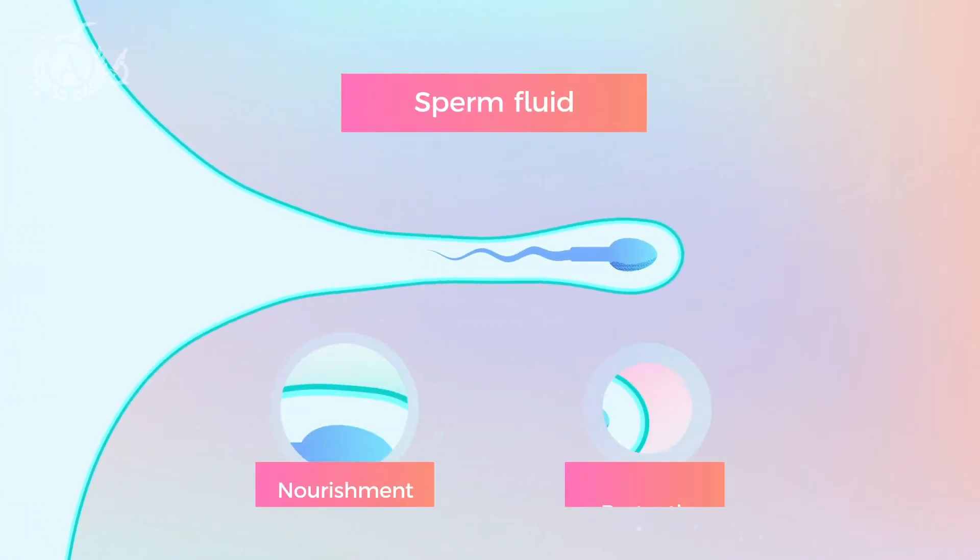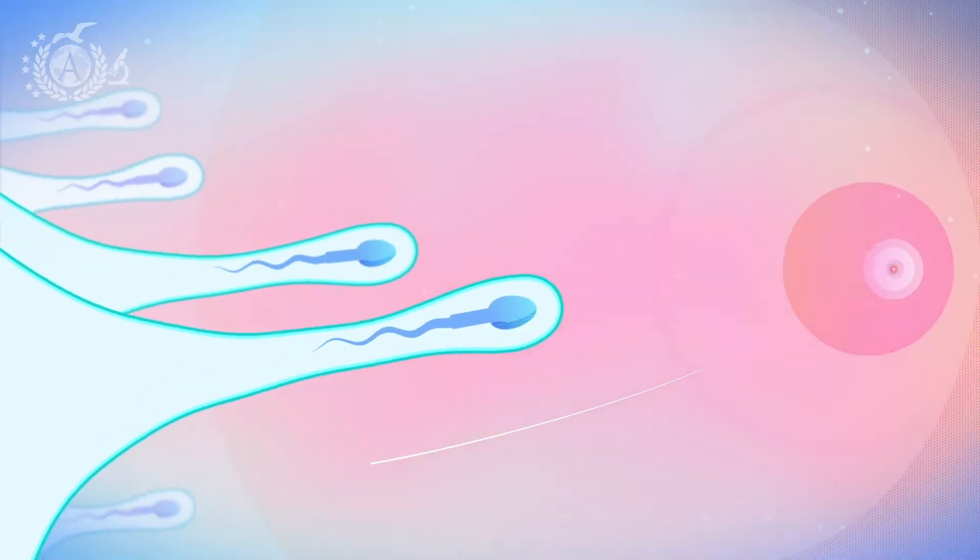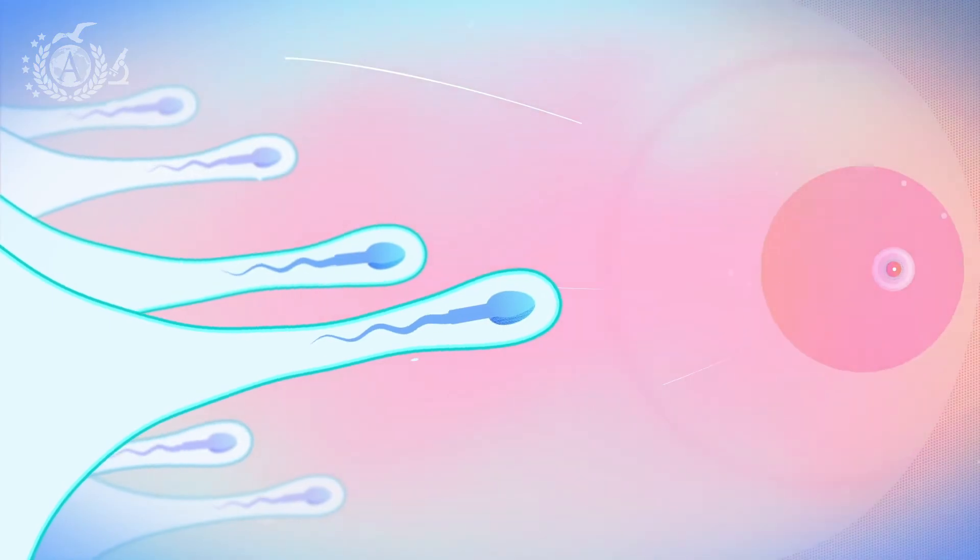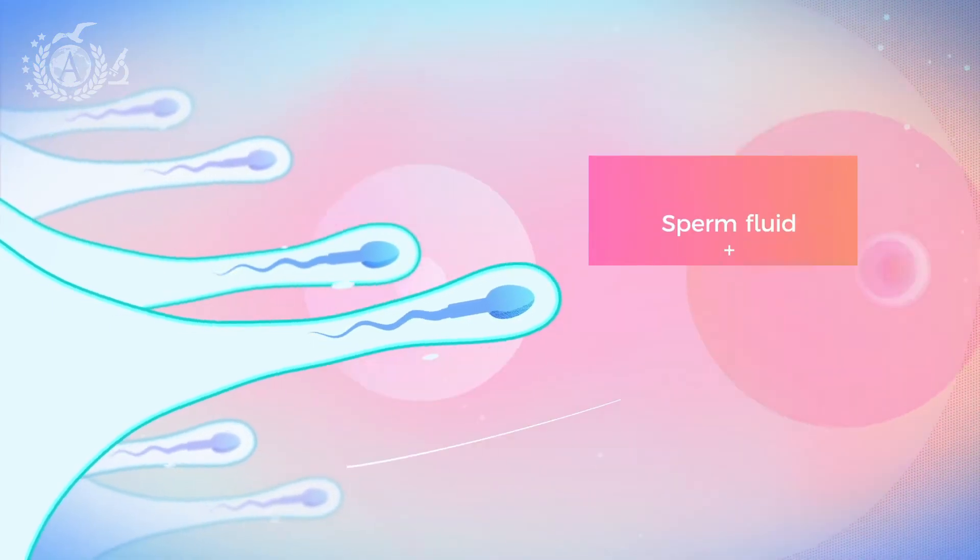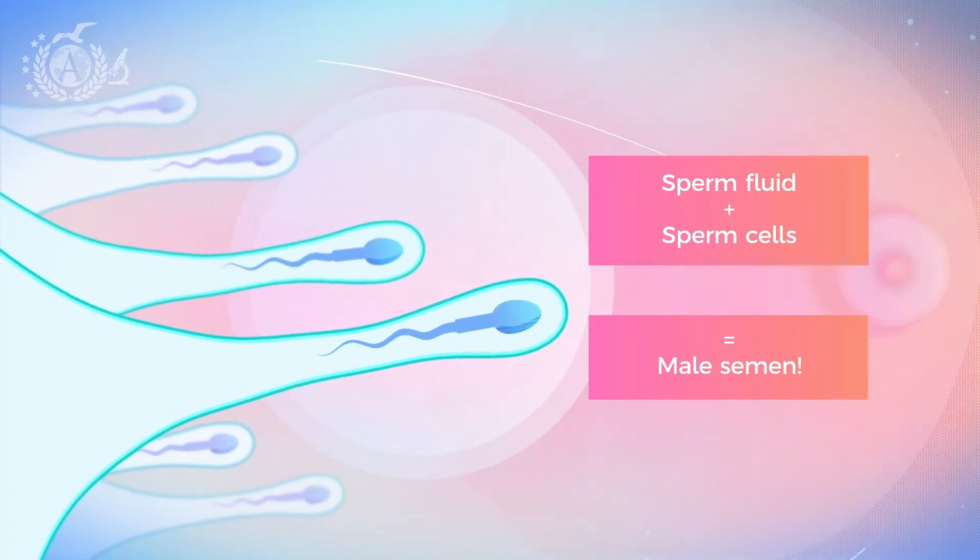This provides the correct supply of nutrients to the sperm cells and protects them until they've reached their destination, the ovum. It will be the combination of sperm cells and sperm fluid that will create the actual male semen. But let's take a closer look at this.